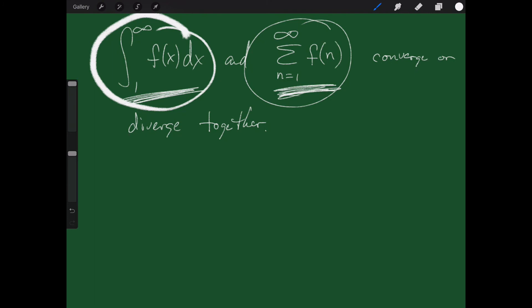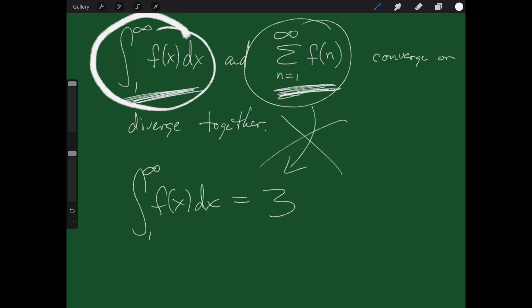One thing people do wrong: if the integral from 1 to infinity of f of x dx equals 3, they say the series must converge to 3. That's wrong — it doesn't necessarily converge to 3, but it does converge to something. If one converges, the other converges, but what does the series converge to? We don't know, and we don't necessarily care. We're just trying to figure out if it converges.